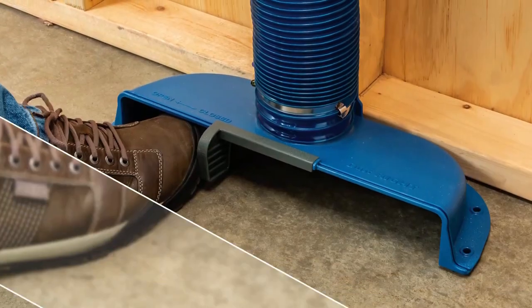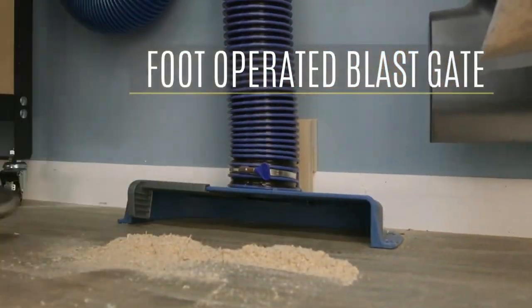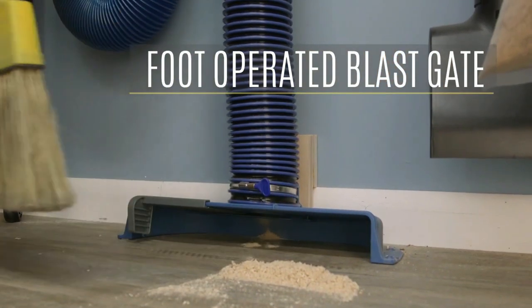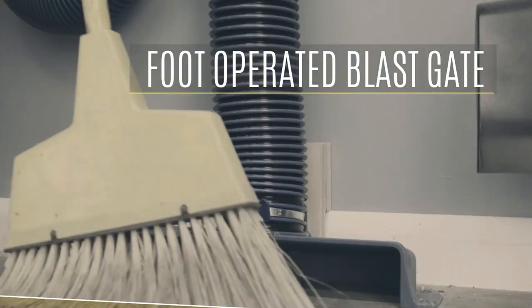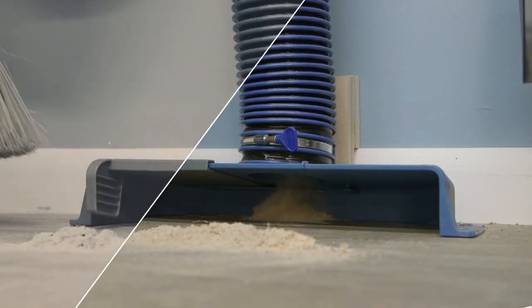It incorporates a foot-activated blast gate so you can easily open it for use, then close it to maximize suction elsewhere in your shop. Mounted to the floor or the bottom of a wall with the pre-drilled mounting holes.